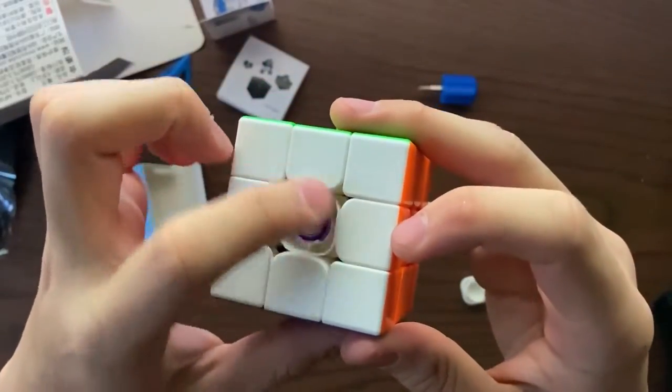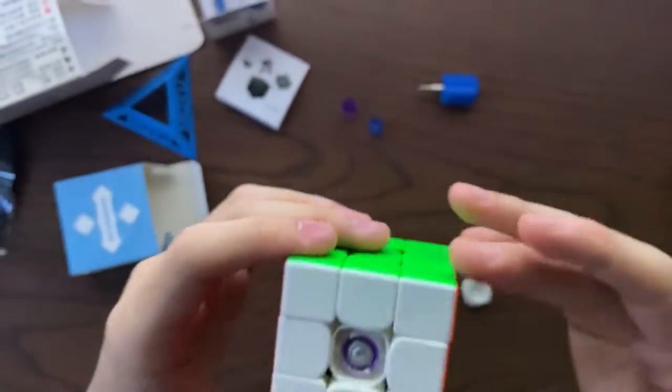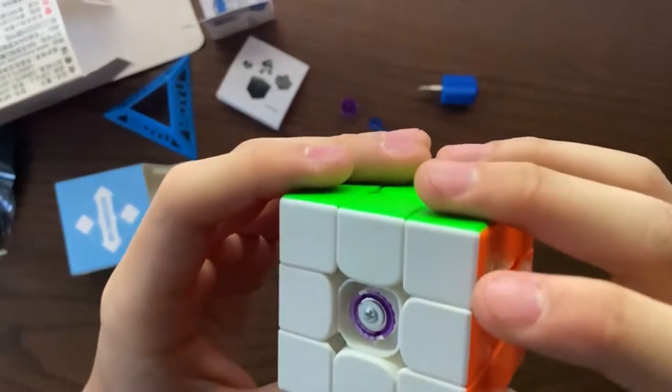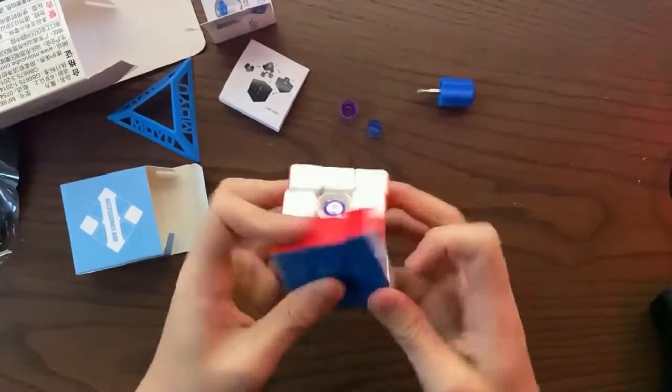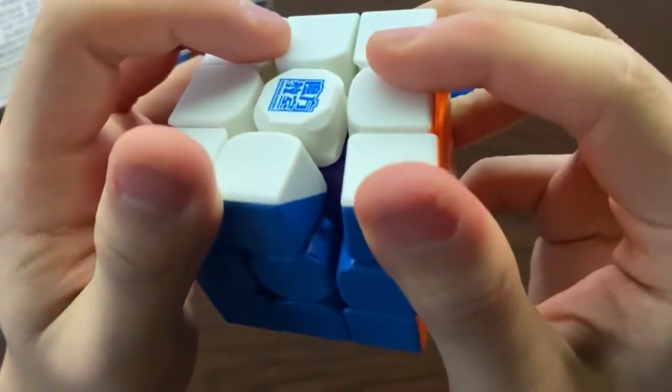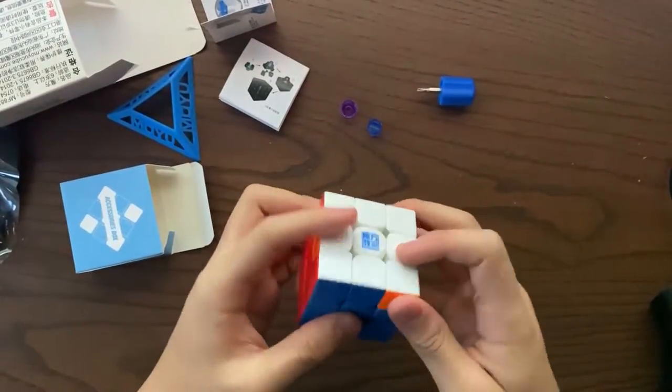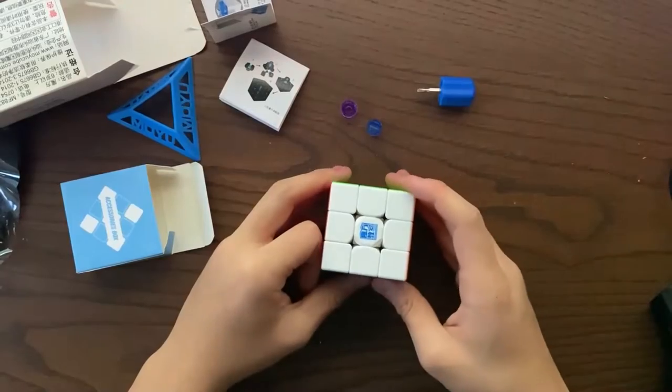So in here, we see the classic purple tensioning system. It is now on the lowest setting. I really like this setting honestly, but the cube is really dry, I think. I think it needs lubing and also tensioning because it's just so tight. I have to loosen it a bit later. So let's get to it now.